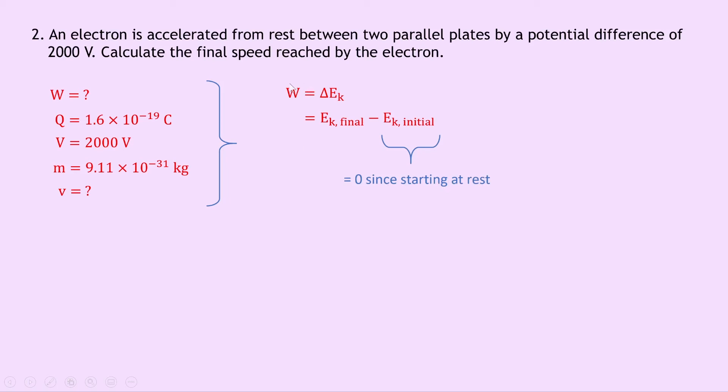So this means we simply have work done is equal to the final kinetic energy, which we can expand as QV equals a half mv squared, where we can say that QV is equal to the work done W from W equals QV. And we know that an expression for kinetic energy is a half mv squared. So V in this equation is what we're trying to find, it's V final.